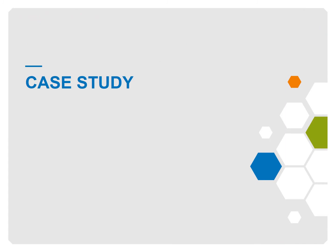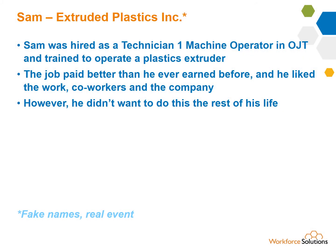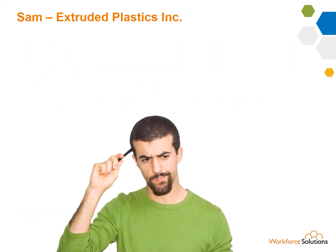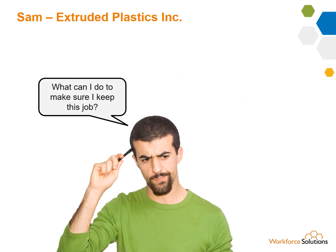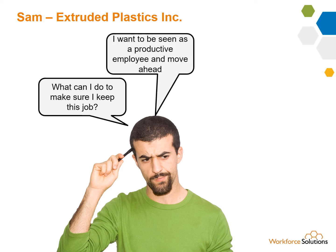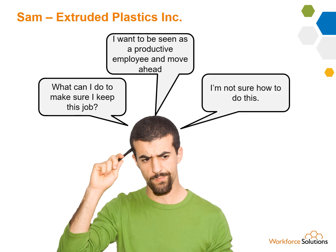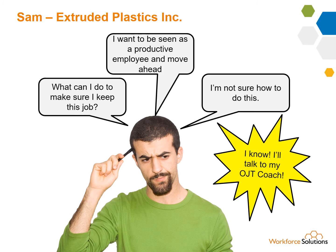Here is a case study on the use of a coach. This is a real coaching situation, but some details like people's names and the company name were changed for privacy's sake. Sam is hired as a technician machine operator on-the-job training and trained to operate a plastics extruder at Extruded Plastics Incorporated. The job paid better than he had ever earned before, and he liked the work, the coworkers, and the company. However, he didn't want to do this for the rest of his life. Sam thought to himself: what can I do to make sure I keep this job? He wanted to be seen as a productive employee and move ahead, but he realized he wasn't sure how to go about doing this. So he decided he could talk to his on-the-job training coach, which he did.